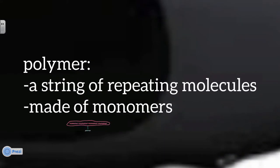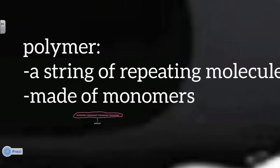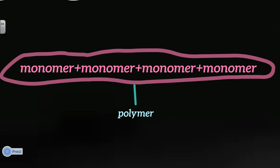So the technical definition of a polymer is a string of repeating molecules which is made up of monomers. So you have a monomer plus a monomer plus a monomer plus a monomer. That whole thing together makes a polymer. So a polymer is just a string of monomers.